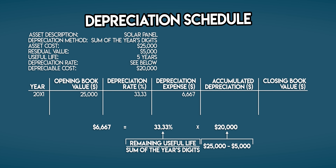One third of $20,000 is $6,667 — your solar panel's depreciation expense in year one. Accumulated depreciation is the sum of all depreciation expenses incurred to date; in year one it's the same as your depreciation expense. Closing book value — the net asset amount on your balance sheet — is your opening book value of $25,000 minus your depreciation expense of $6,667, which equals $18,333.